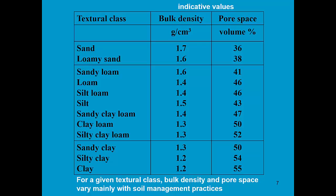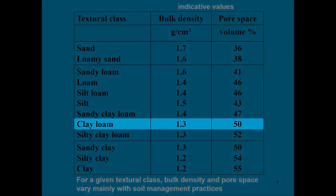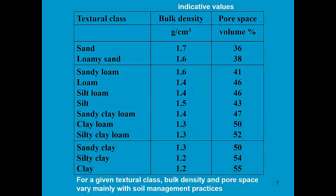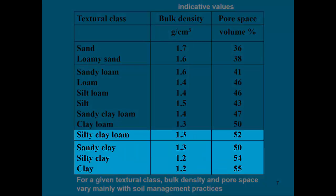In this slide, some indicative values for bulk density and pore space are given for the 12 textural classes. A clay loam soil with a pore space of 50% has a bulk density of 1.3. Above are the more sandy soils, which have a smaller pore space and hence a larger bulk density. Below are the more clayey soils, which have more pore space but a smaller bulk density.